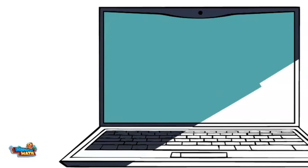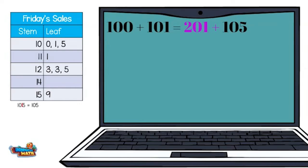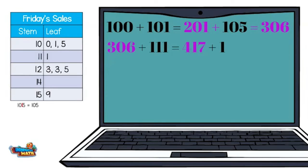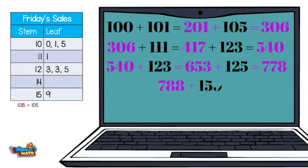Glad to be of help. Start with 100, then add 101, plus 105, plus 111, plus 123, plus 123, plus 125.